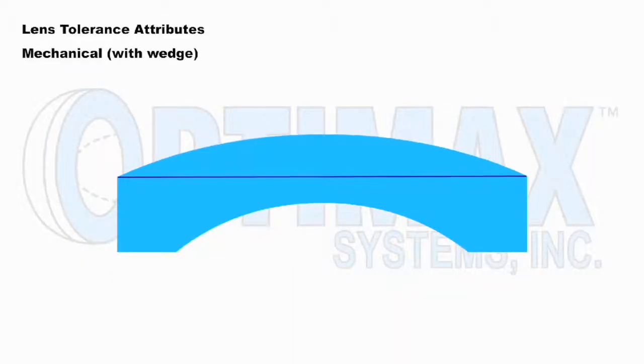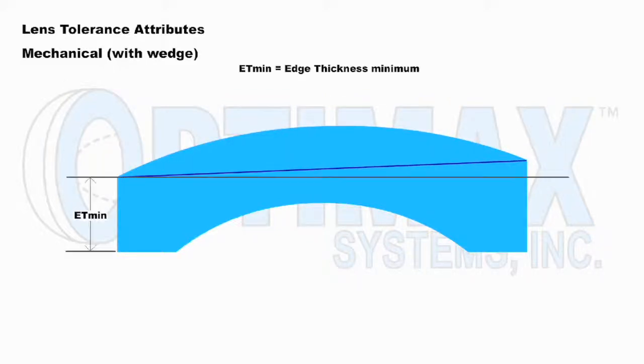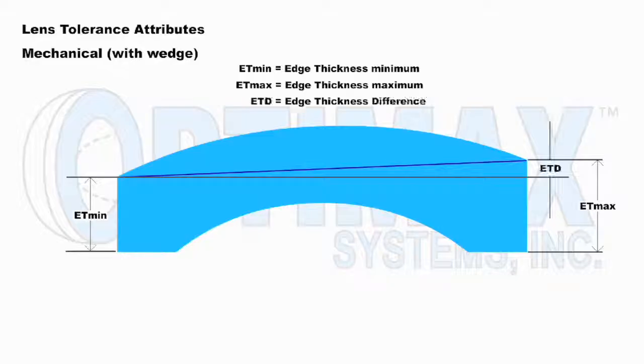Next, we introduce centering error as seen as edge thickness difference. This represents misalignment between the optical and mechanical axes of a lens.